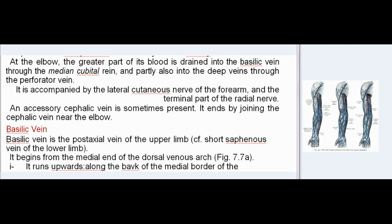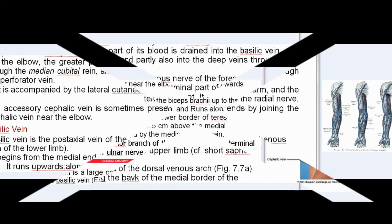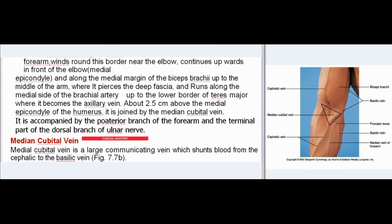The basilic vein is the post-axial vein of the upper limb (cf. short saphenous vein of the lower limb). It begins from the medial end of the dorsal venous arch, runs upwards along the back of the medial border of the forearm, winds round this border near the elbow, continues upwards in front of the medial epicondyle along the medial margin of biceps brachii to the middle of the arm, where it pierces the deep fascia and runs along the medial side of the brachial artery to the lower border of teres major, where it becomes the axillary vein. About 2.5 cm above the medial epicondyle it is joined by the median cubital vein.